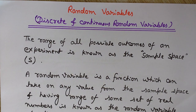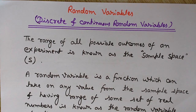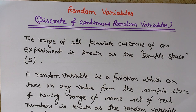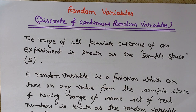Whenever we perform any experiment — suppose we are tossing three coins at the same time — we may have heads or tails on any of these coins. So either we may have heads on all three coins, tails on all three, or two heads and one tail, or two tails and one head. There are a total of eight possibilities. All these outcomes of the experiment of tossing three coins is called the sample space.